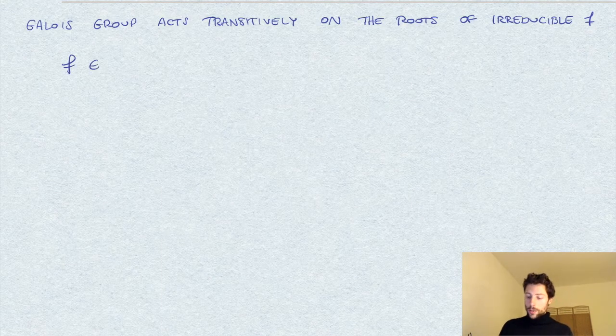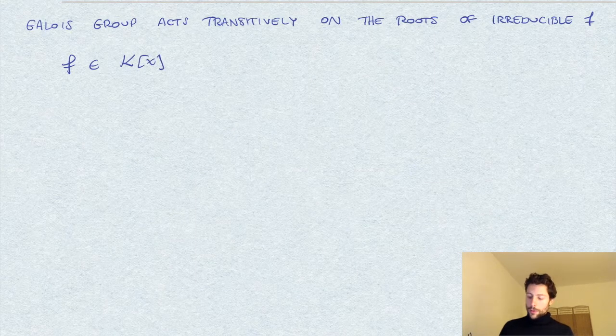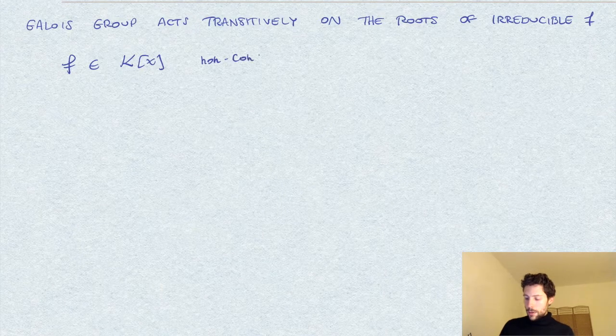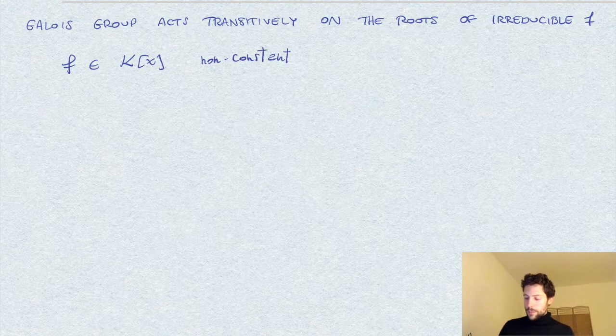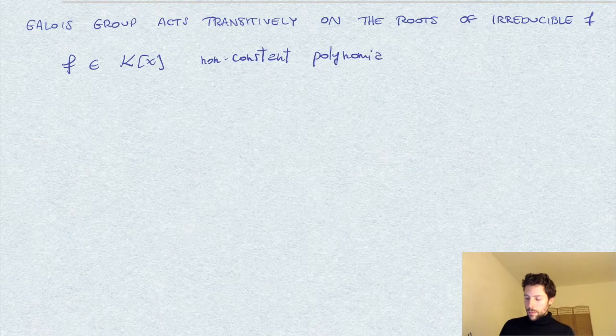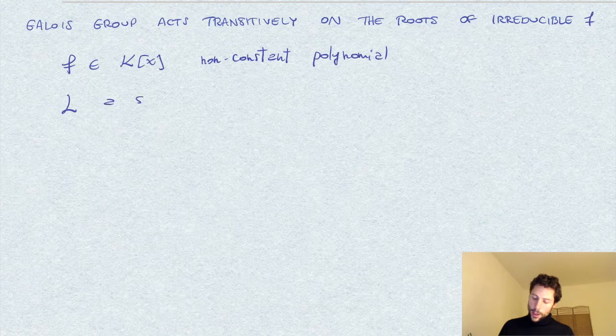The setting is as follows. We denote by F a non-constant polynomial over field K, and we consider L a splitting field for F.